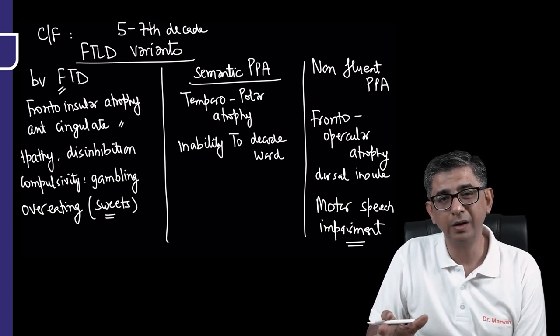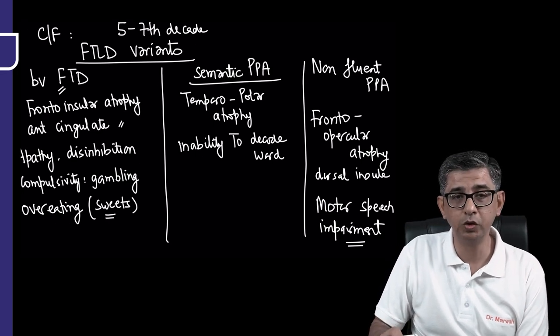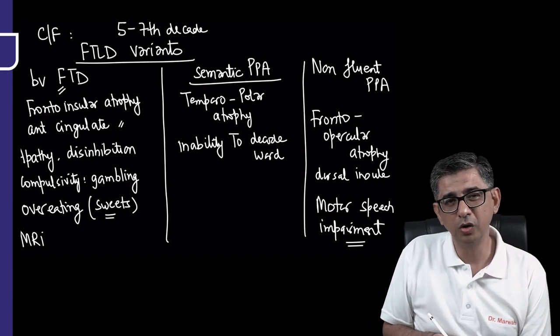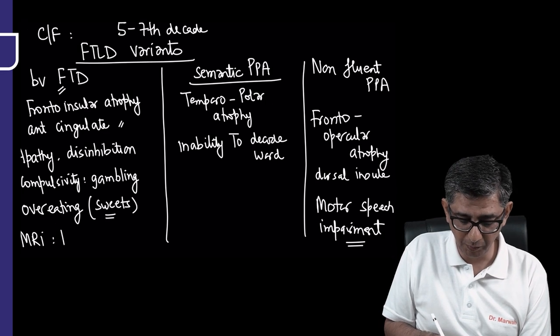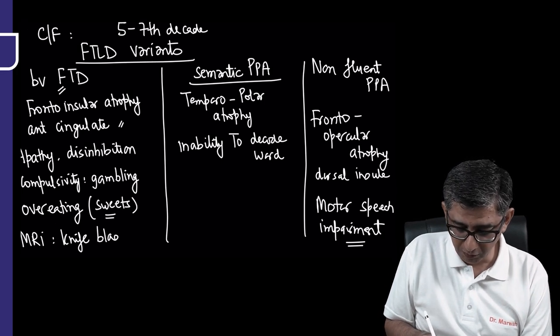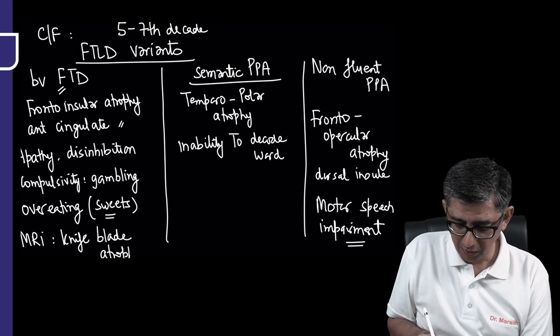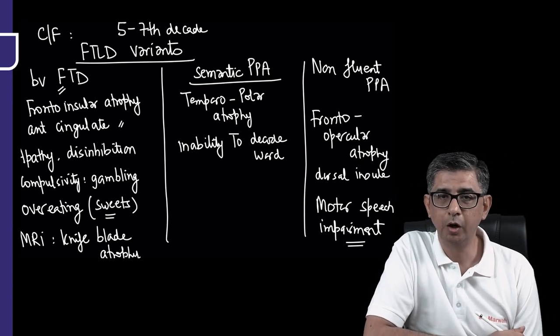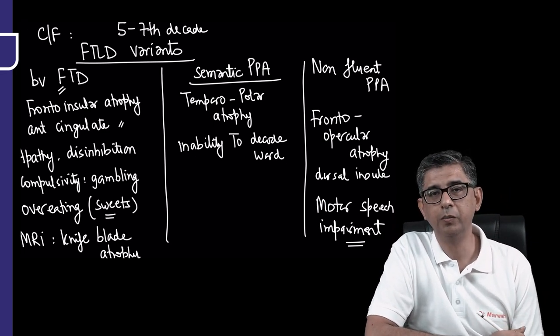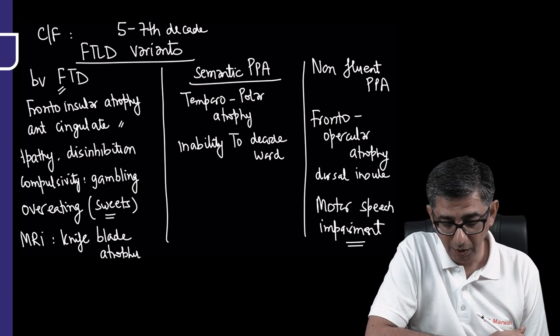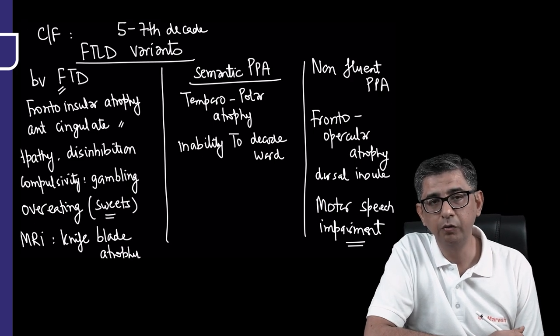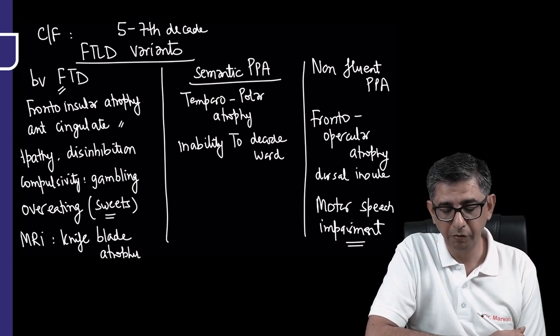Here are the three varieties of frontotemporal lobar degeneration, of which most of the time we're going to read about the behavioral variety. He can also incorporate an MRI head finding - because the gyri and sulci are obviously getting involved in the frontotemporal area, they will look very sharp. A classical term, just like hummingbird appearance with progressive supranuclear gaze palsy or hot cross bun sign for multi-system atrophy - knife blade atrophy would be seen with behavioral variant of frontotemporal dementia.